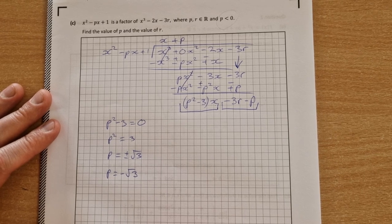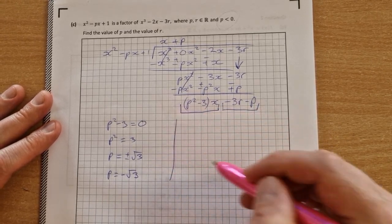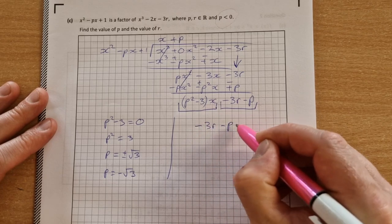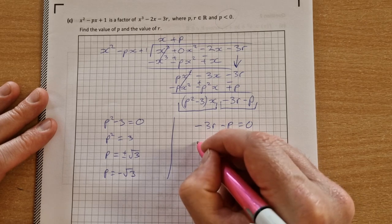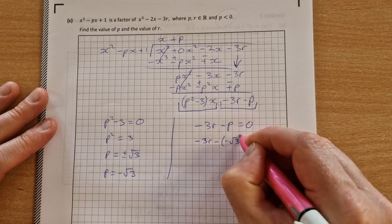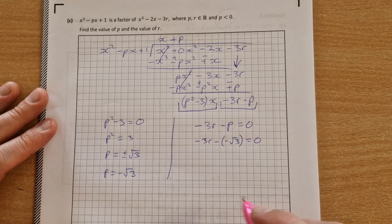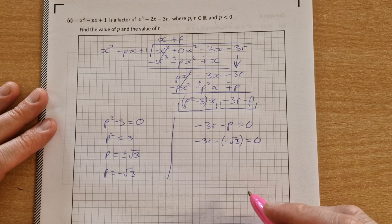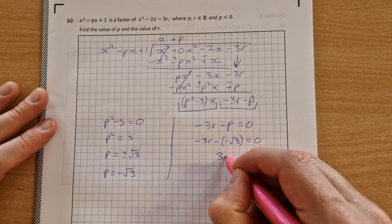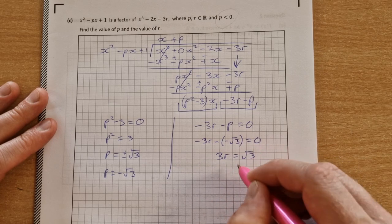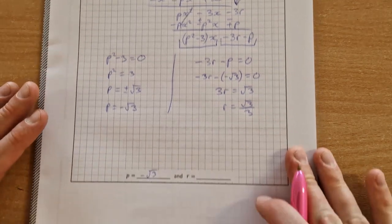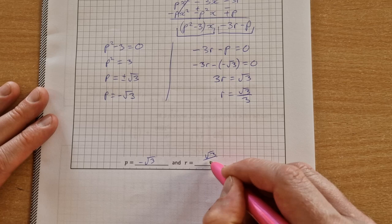So we can pop that down there, minus root 3, and then to get our r value, we have minus 3r minus p equal to 0. We know p is minus root 3, so it's minus 3r minus minus root 3 is equal to 0, so that's just plus root 3, minus 3r plus root 3 is equal to 0. r is to one side, numbers to the other side, we end up with 3r is equal to root 3, divide by 3 then, get r is equal to root 3 over 3. And then we can write that down there, root 3 over 3.